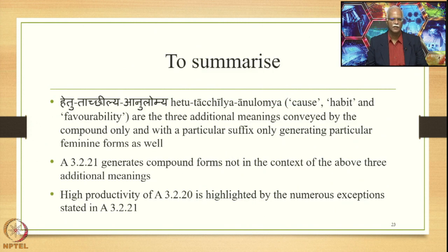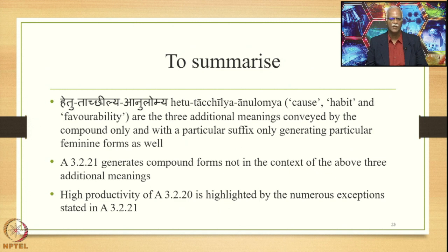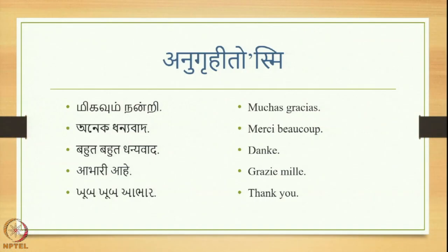To summarize: Hetu, Taccilya, and Anulomya — cause, habit, and favorability — are the three additional meanings conveyed by the compound in 3.2.20, generating particular feminine forms as well. Sutra 3.2.21 generates compound forms not in the context of those three additional meanings. The high productivity of 3.2.20 is highlighted by the numerous exceptions stated in 3.2.21. We will study the other Sutra stating the Upapada Samasa-based suffix in the next lecture.